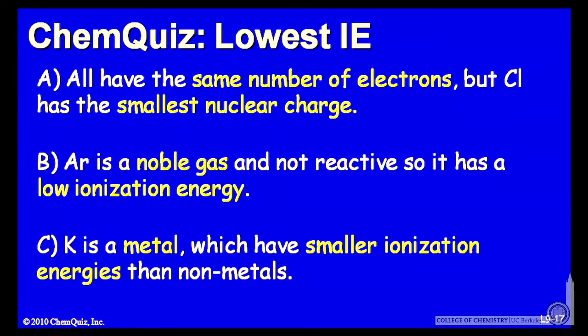Let's look at an argument for each of the answers. A, chlorine minus, all of these have the same number of electrons, but chlorine has the smallest nuclear charge, so it should have the lowest ionization energy.